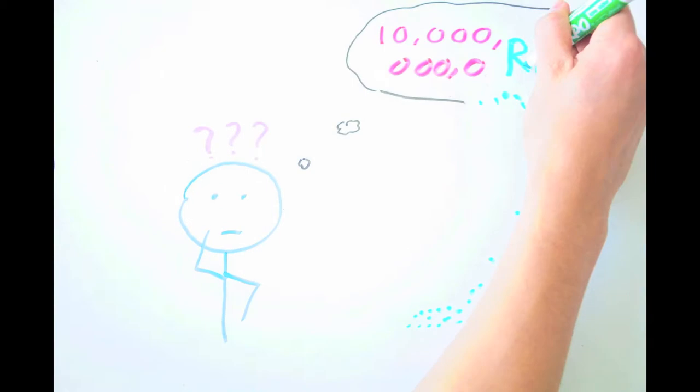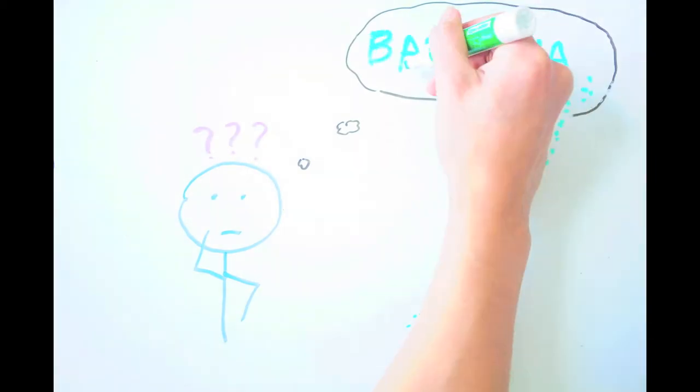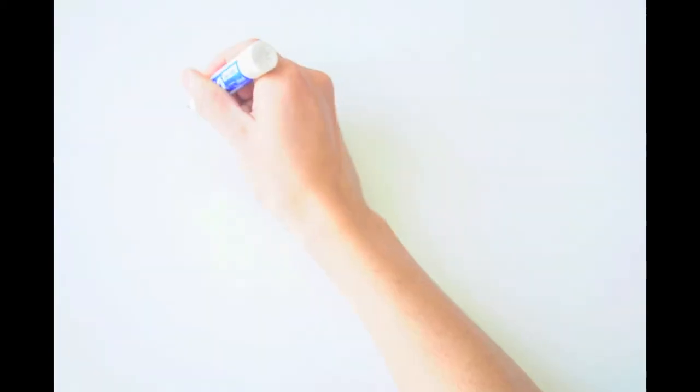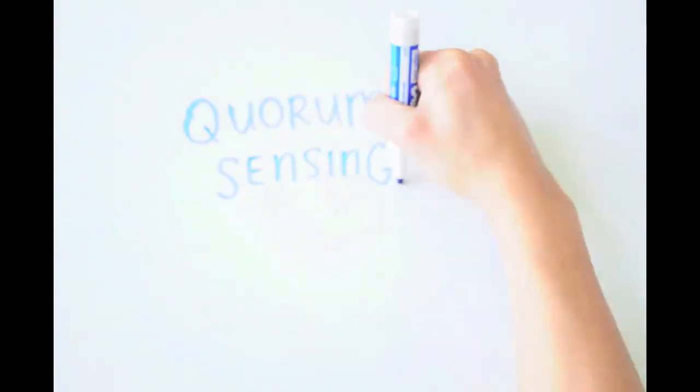Well, millions of bacteria can band together and act in unison by sending signals back and forth to each other. This communication is called quorum sensing.